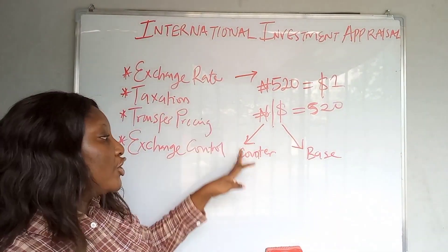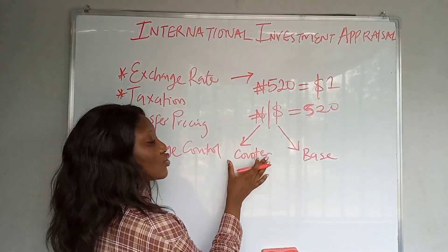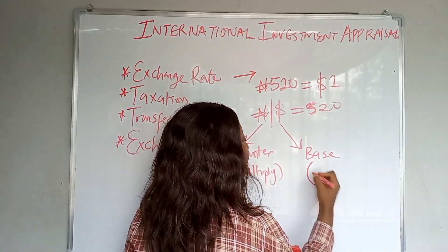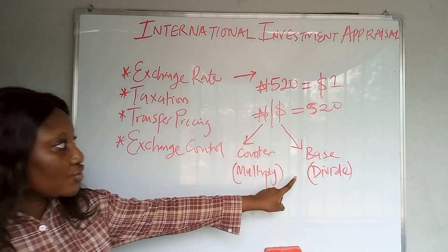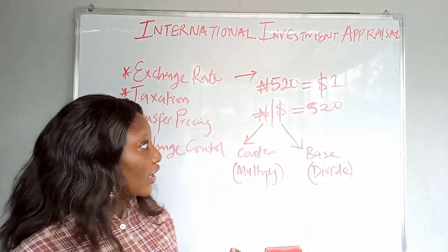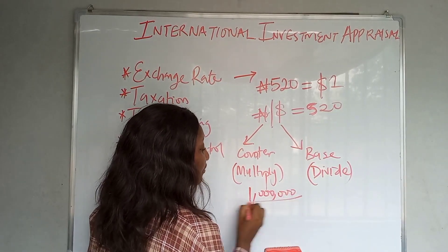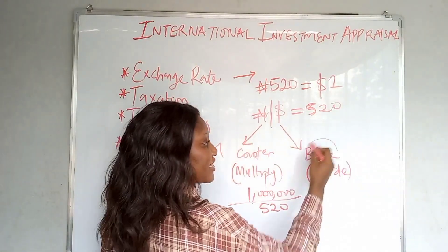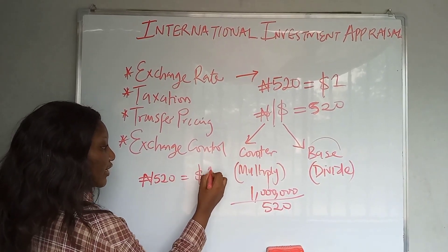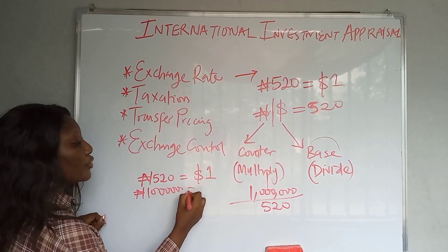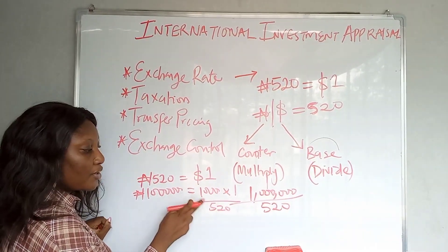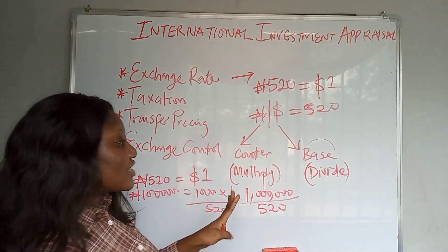When converting currencies, there is a simple rule: whenever you are converting to counter currency you multiply, and whenever you are converting to base currency you divide. For example, if you want to convert one million naira to dollars, you divide by 520 — the exchange rate. One million divided by 520 gives you the dollar amount. That's where the rule comes from.